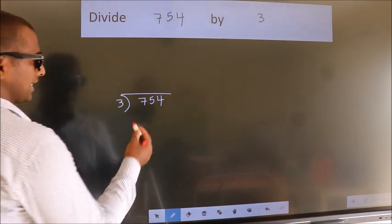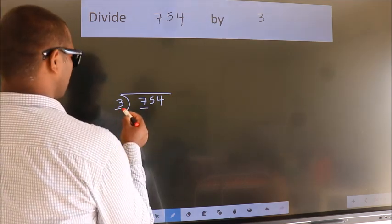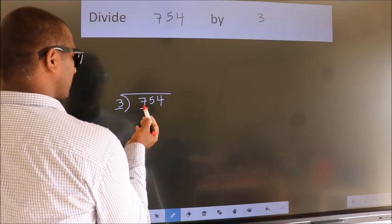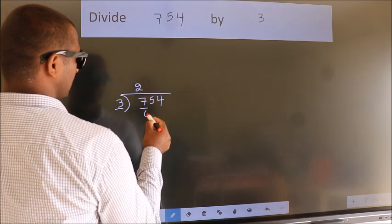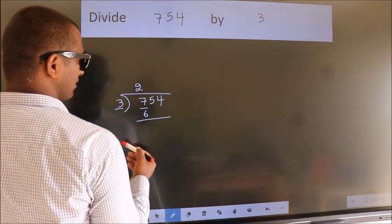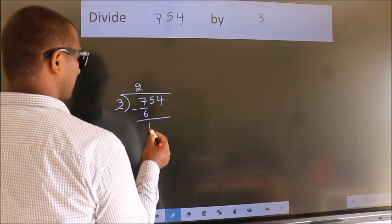Next. Here we have 7, here 3. A number close to 7 in 3 table is 3 2s, 6. Now we should subtract. We get 1.